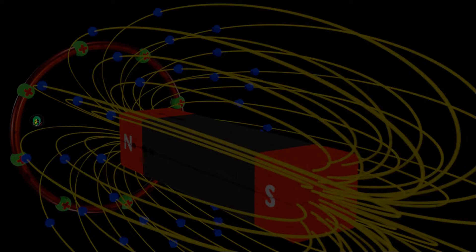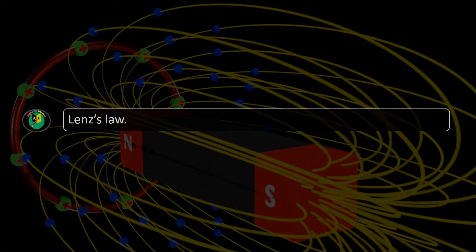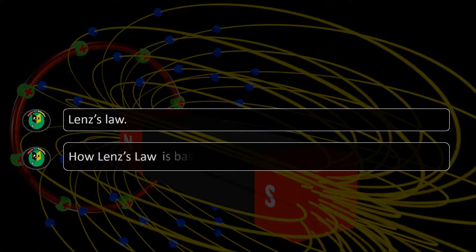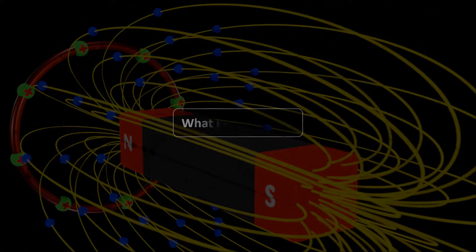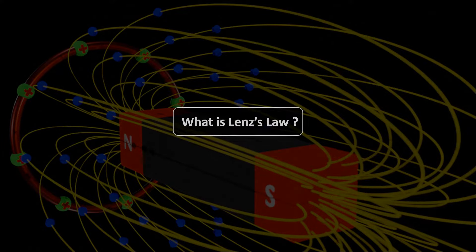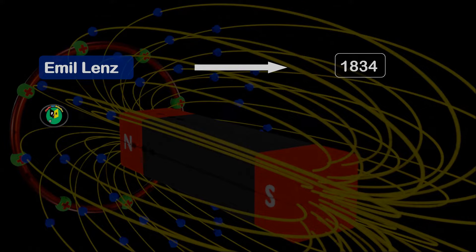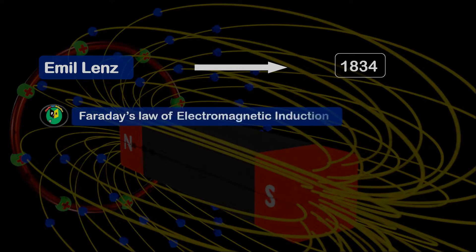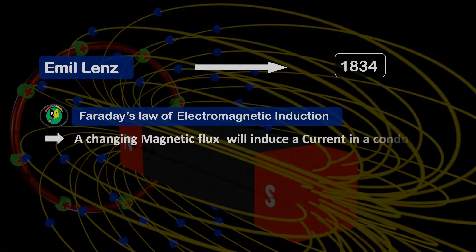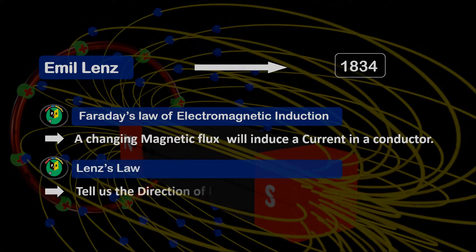In this video we will talk about Lenz's law and understand how Lenz's law is based on the law of conservation of energy. Lenz's law is named after the physicist Emil Lenz and was formulated in 1834. It is based on Faraday's law of electromagnetic induction, which states that a changing magnetic flux will induce a current in a conductor, whereas Lenz's law tells us the direction of that induced current.